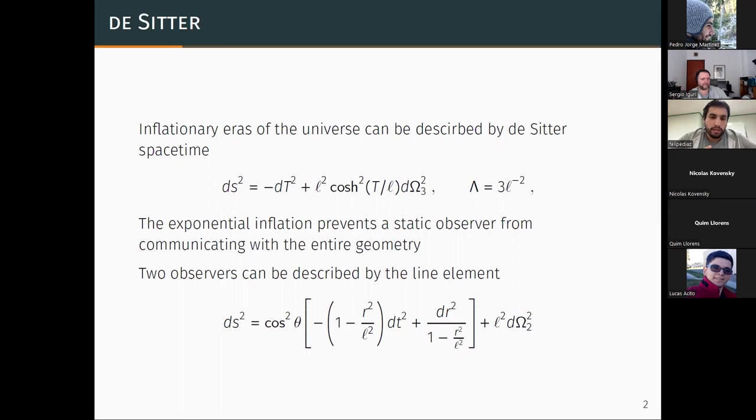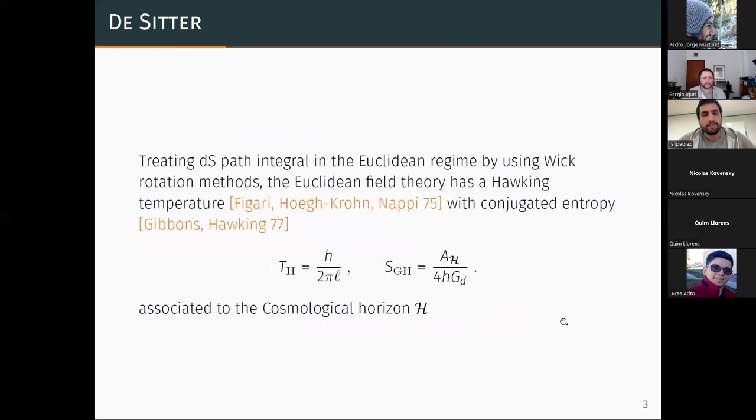This corresponds to the maximally symmetric solution to the vacuum Einstein equations. Due to this exponential inflation, the light rays do not manage to propagate to the whole space-time, so observers inside the De Sitter are going to have access to the whole region cannot communicate. These observer-dependent quantities can be described by this line element.